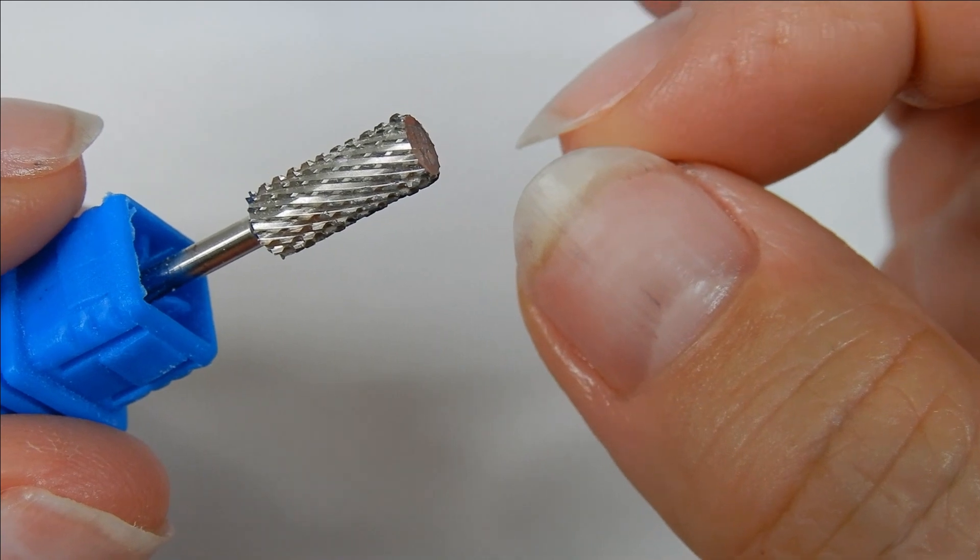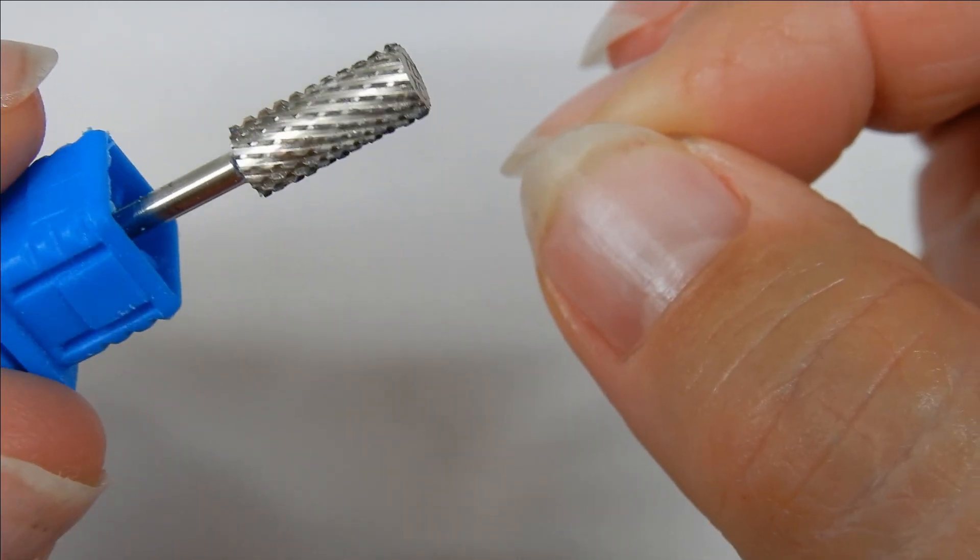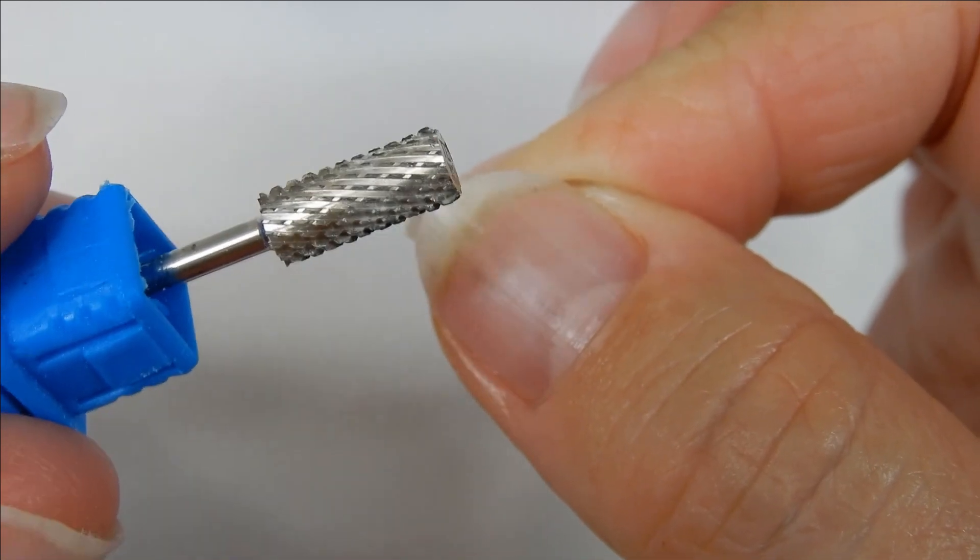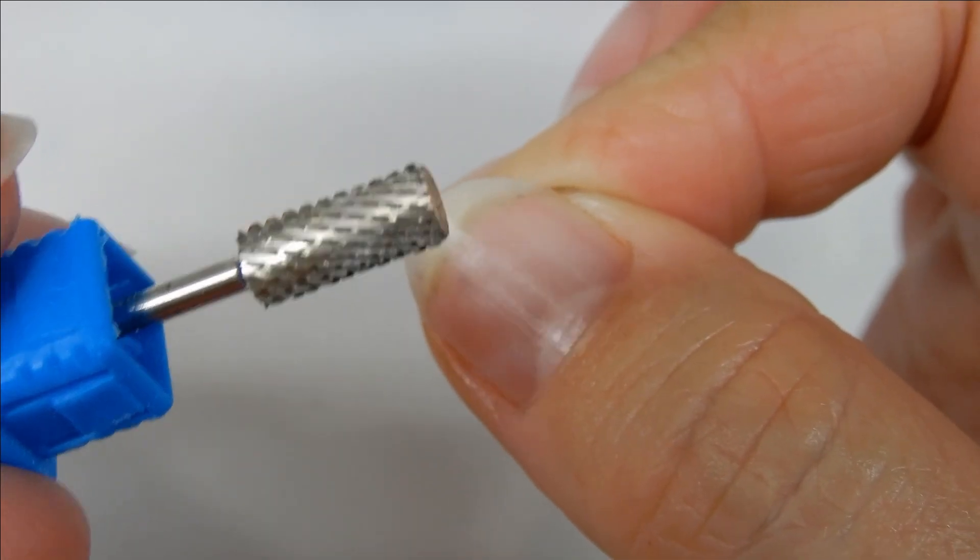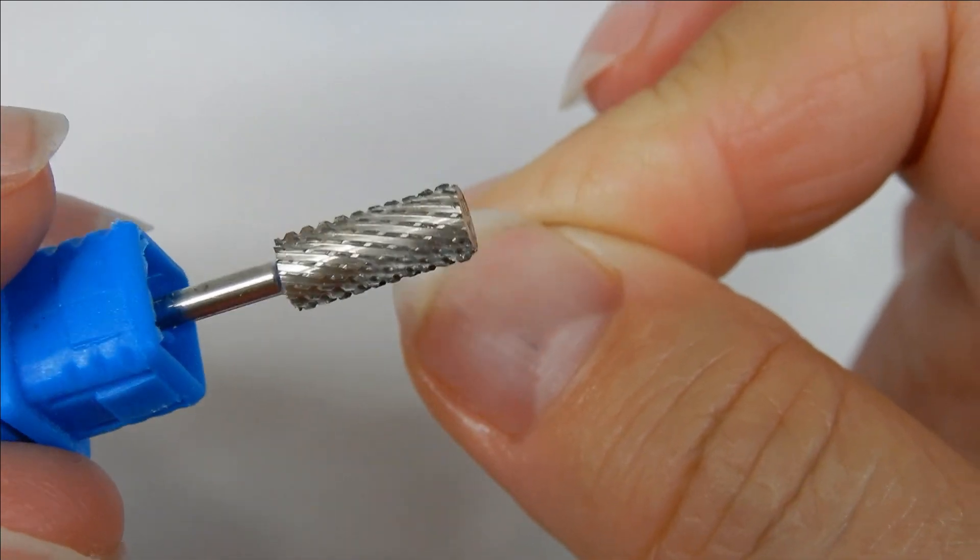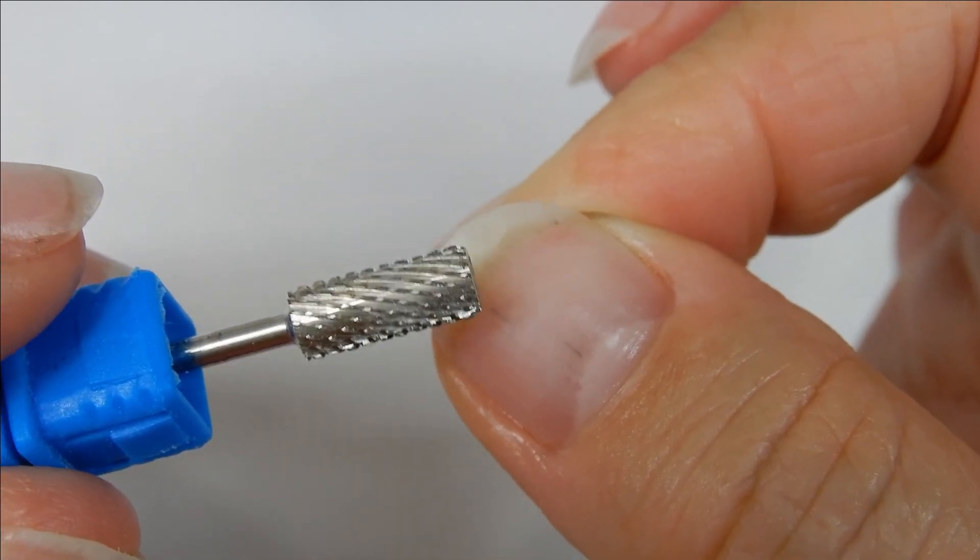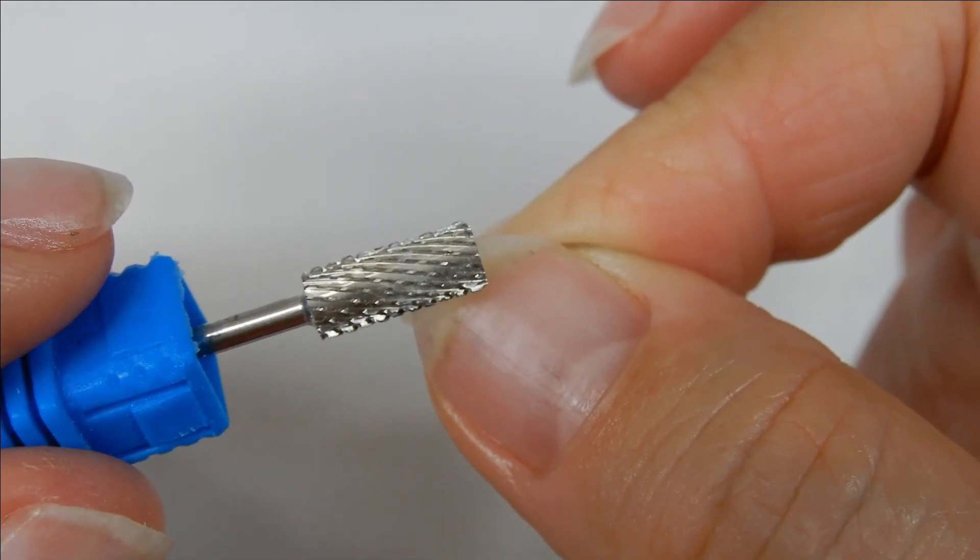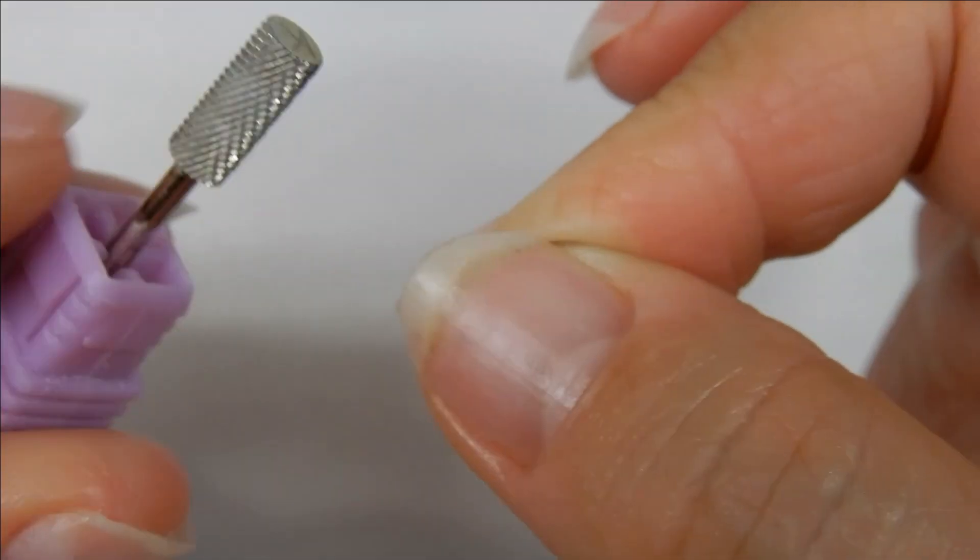I said that I remove all of my product with carbide bits and I want to just give you a quick rundown on how I do that. Now when I start with the bulk of the product on the nail, I use a coarse carbide bit and I use that to get through a lot of that thick bulk of product that's on the nail and reduce it way down till you have like a thin layer over your nail.